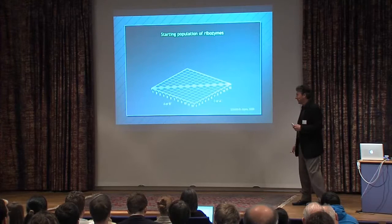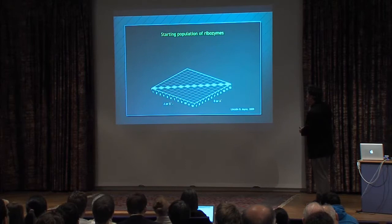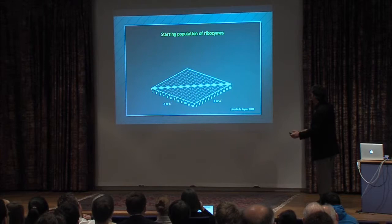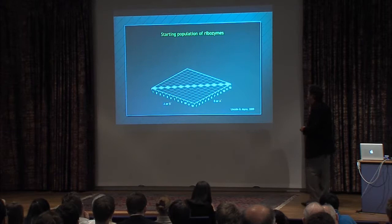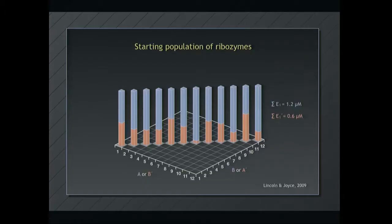So now let's do an evolution experiment. And the way we started this experiment, this is kind of the scorecard of possibilities. So here's the first trait, whether it's A on the Watson side or its partner B prime on the Crick side, or likewise B on the Watson side and its partner A prime on the Crick side. So there's 144 possibilities. To start the game off, we seeded the system with the 12 on the diagonal. So this is trait 1 on the left and trait 1 on the right, 2-2, 3-3 and so on.